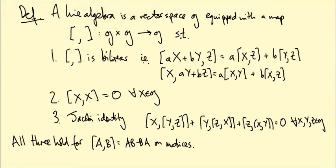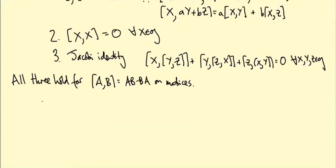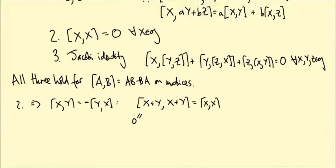So here are some remarks. First of all, point two implies that the bracket is anti-symmetric. In other words, x bracket y is minus y bracket x. And you can see that because the way you prove it is you take x plus y bracket x plus y. Because you're bracketing the same thing with itself, this is zero. You use bilinearity to multiply it out and you get x bracket x plus y bracket y, both of which vanish. Plus x bracket y plus y bracket x. And cross terms. So this vanishes, this vanishes, this vanishes. And all you're left with is x bracket y plus y bracket x equals zero. So that's anti-symmetry.